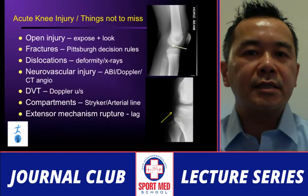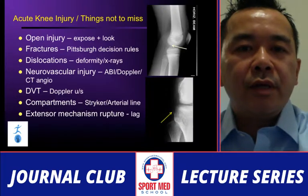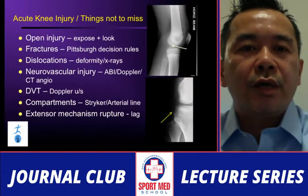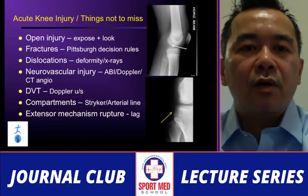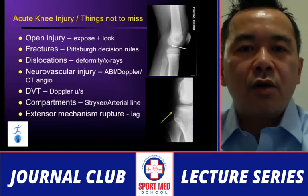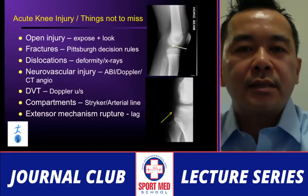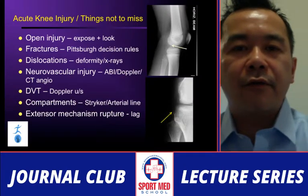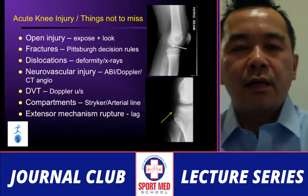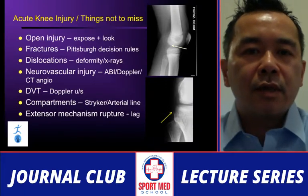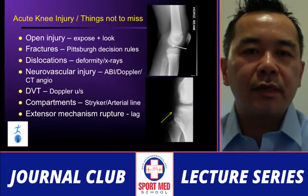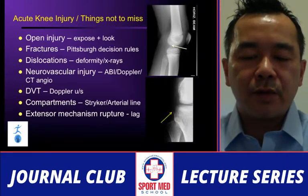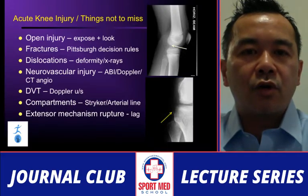For acute knee injury, things not to miss: an open injury — look at the knee and make sure there's no obvious skin compromise, skin tenting, or skin buckling, as in a knee dislocation with the medial collateral ligament and medial meniscus entrapped. That is a rare injury. Also look for open patellar fracture or quadricep extensor mechanism injury.